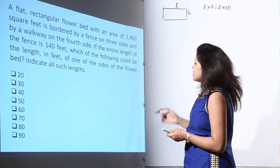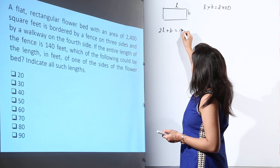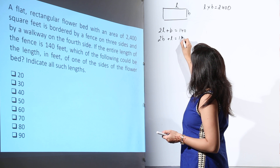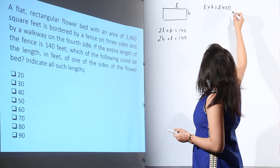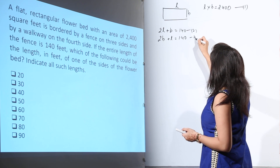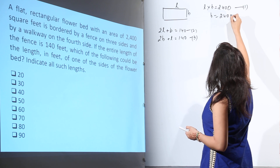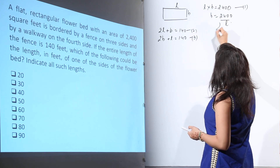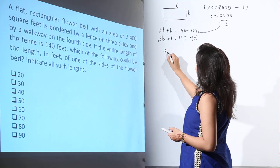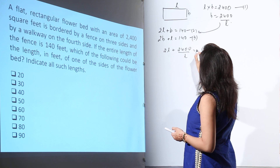We have to take both possibilities. That means it will be either 2L + B = 140, or 2B + L = 140. Let us take the area equation as equation 1, the first fence equation as equation 2, and the second as equation 3. From equation 1, we can deduce that breadth B = 2400 / L. Substituting this into equation 2: 2L + 2400/L = 140.